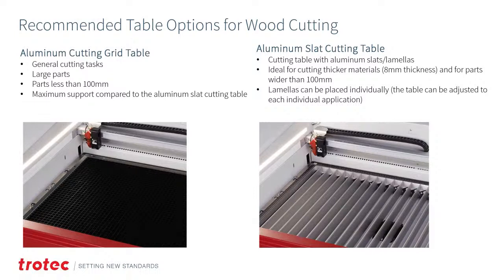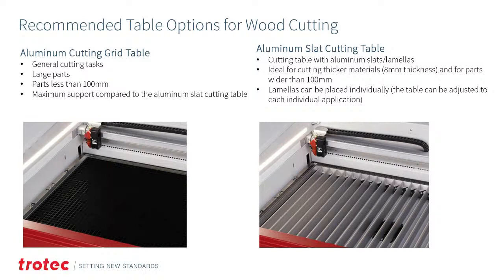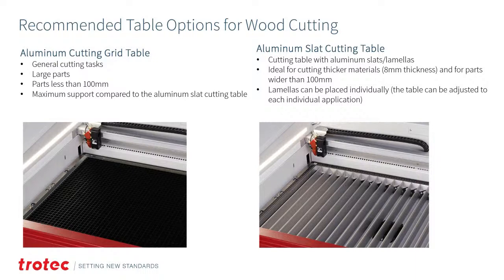No matter what laser system you use, different table options and accessories are recommended for processing wood. Trotec offers an aluminum cutting grid table — ideal for general cutting tasks, large and small parts under 100mm, offering maximum support. There's also an aluminum slat cutting table, where individual slats can be removed so excess laser power passes through, giving a cleaner cut especially for thicker materials. Many tables are interchangeable on the Speedy Series depending on your application.